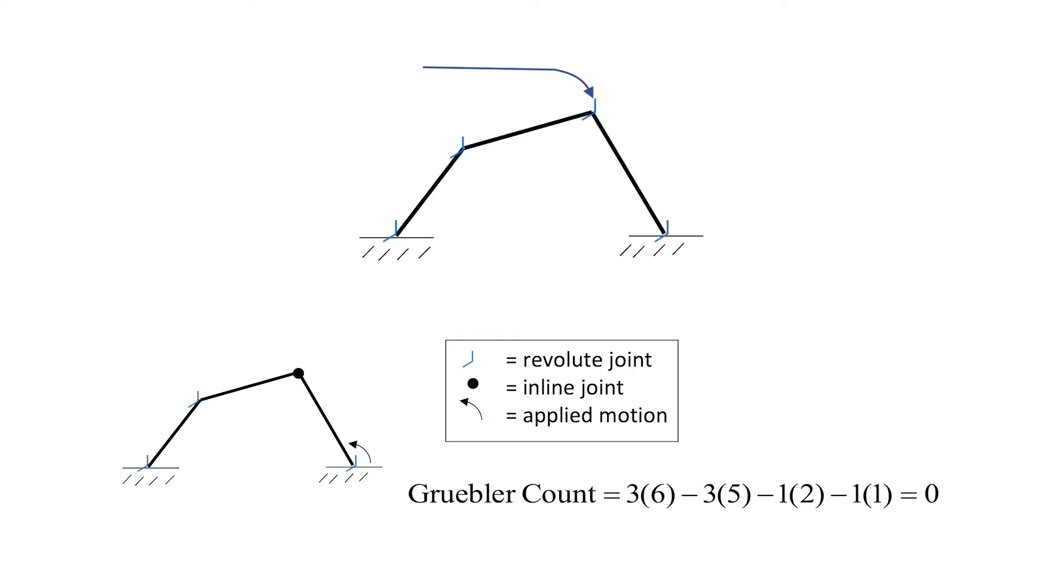So all we need to do is make sure the ends of the two links always remain along the line perpendicular to the page. This is called an inline constraint and it removes two degrees of freedom. An inline joint is an example of a joint primitive. It may be difficult or impossible to build in practice, but it does the trick of mathematically removing the redundant constraint.